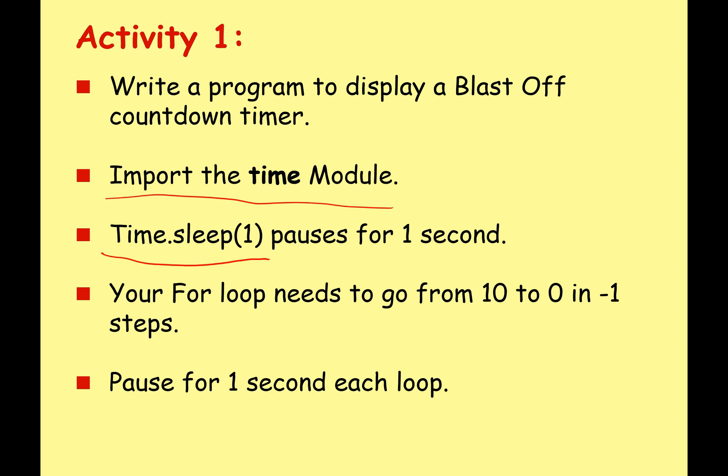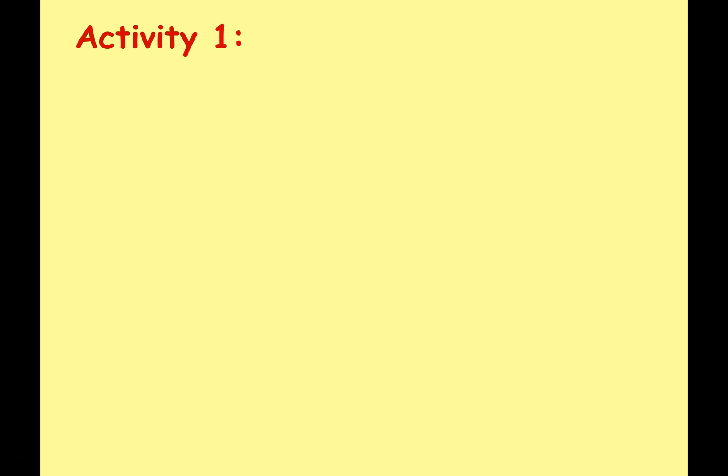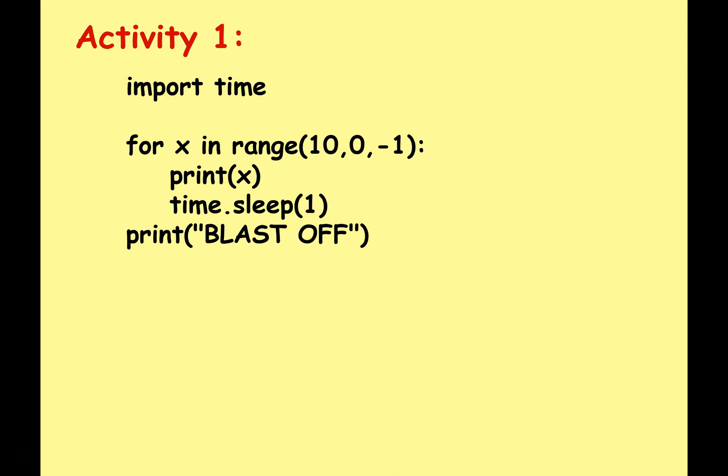Loop, go program it, done it? Good, perfect. Let's have a look at a solution. So we start by importing the time code, for x in range 10 to 0 in steps of minus one, print x.